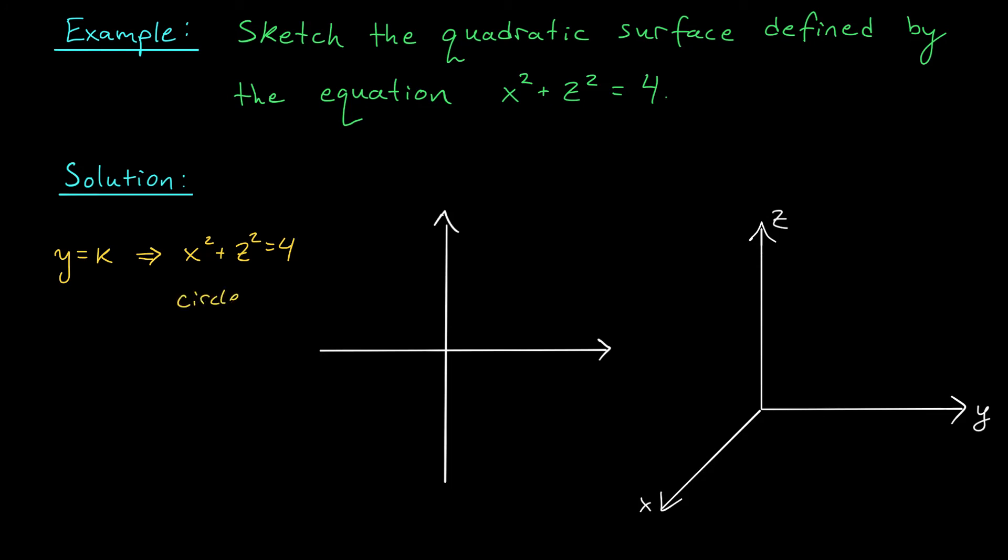And it describes that circle for all values of k. It doesn't matter where you slice it. You're always going to get a circle in the x-z plane of radius 2. Okay, how does this translate to the 3D setting? Well, no matter where I cut along the y-axis,